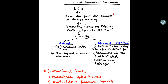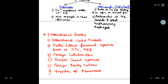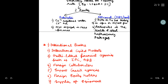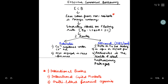Quick revision: First point — ECB is a loan taken from non-residents in foreign currency. Non-residents kaun hain? International banks, international capital market, foreign collaborators, foreign equity holders, supplier of equipment, export credit agencies. Next point — it is issued on floating rate, for example LIBOR plus two percent. Phir do roots ke baare mein batana — automatic route where no approval of RBI or government is needed, and approval route where RBI and government approval is needed.